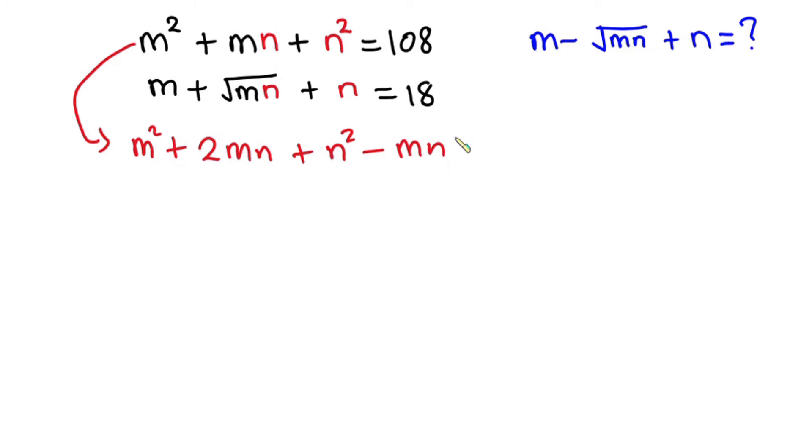Then minus mn. So if you sum these two mn and this negative mn you'll still be getting mn, and this equals 108. Now I can also write this equation as m squared plus 2mn plus n squared minus the square root of mn all squared, and this equals 108.